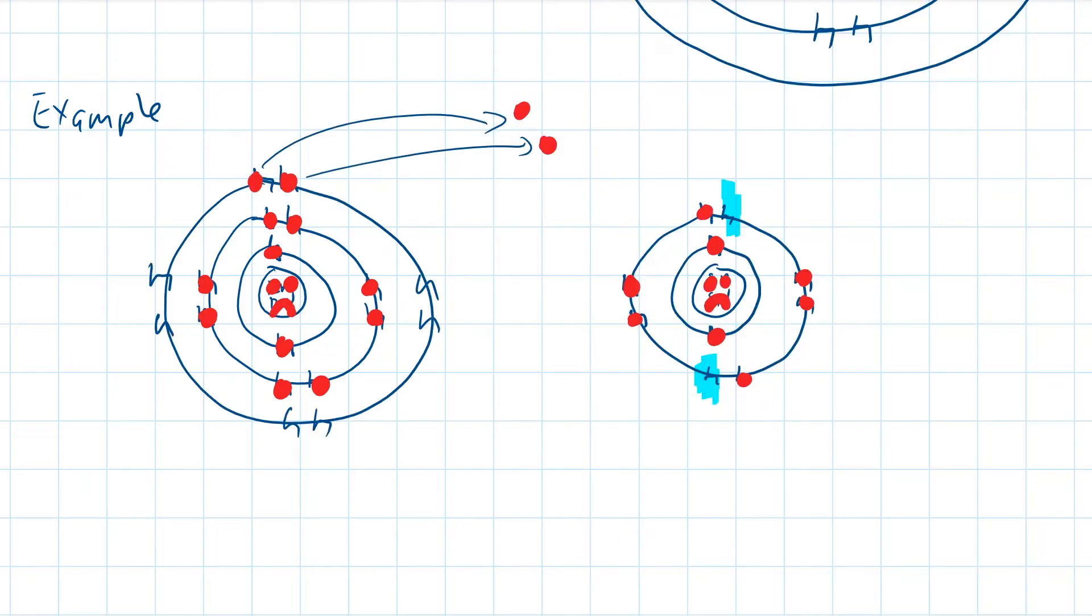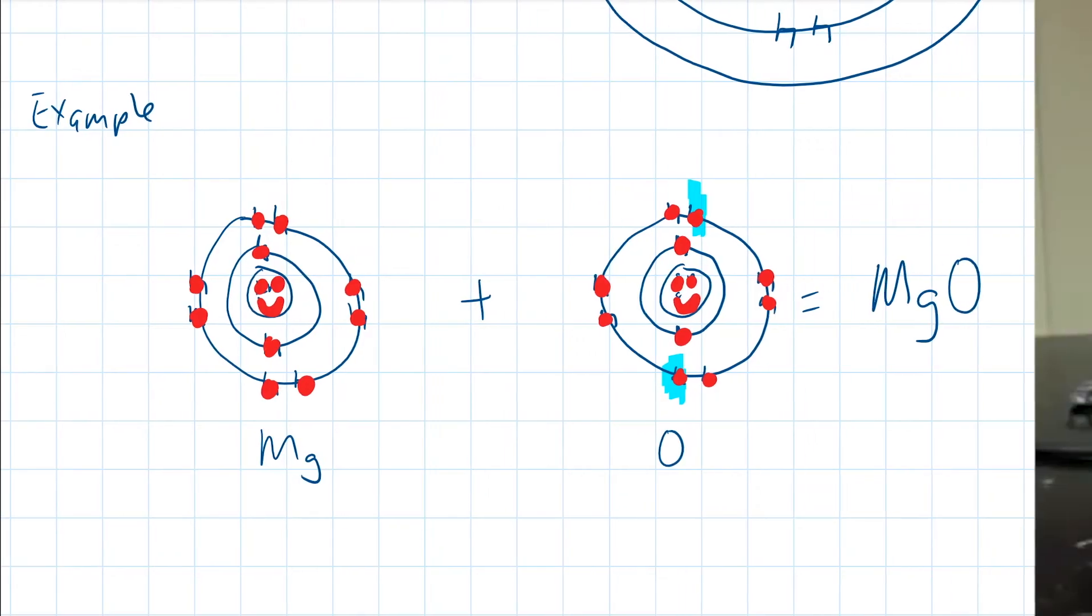So then, what happens to these two stray electrons? Well, seeing that the game on the right coincidentally needs two more players, they will join the second group, and now everybody is happy. This is exactly how magnesium and oxygen bond together to form this fiery sparkle show.